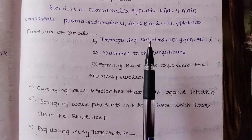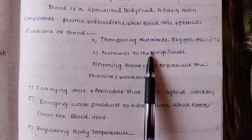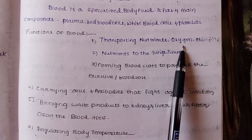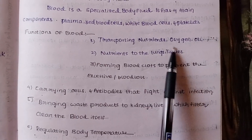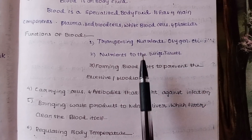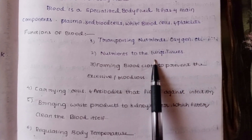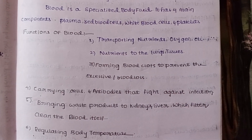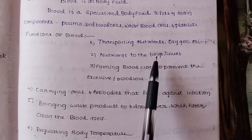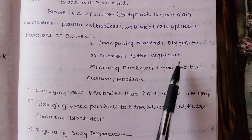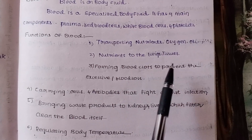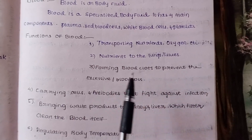Transporting nutrients — blood transports oxygen and nutrients to the lungs and tissues, meaning it supplies different parts of the body. Another function is forming blood clots to prevent excessive blood loss.